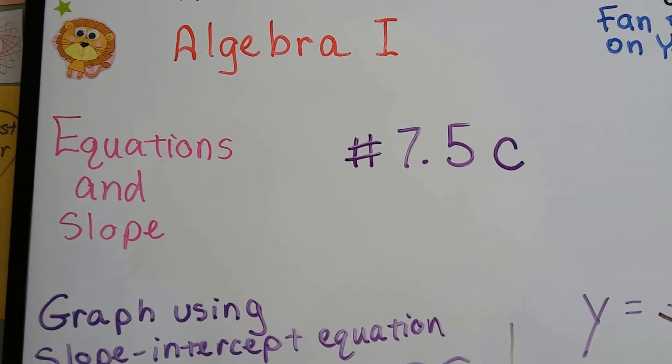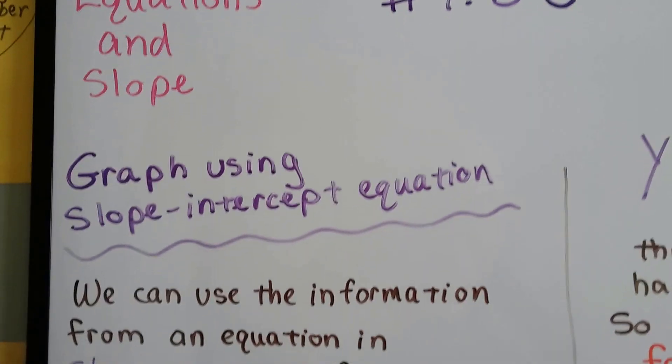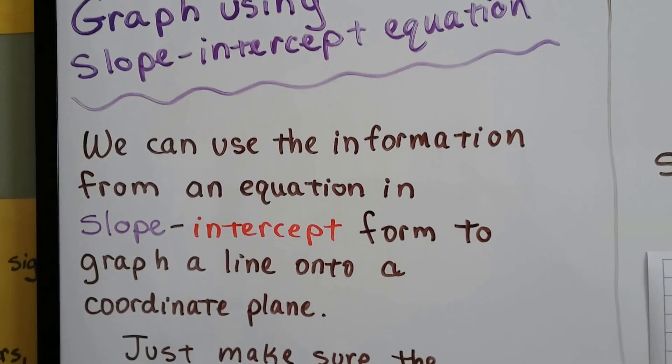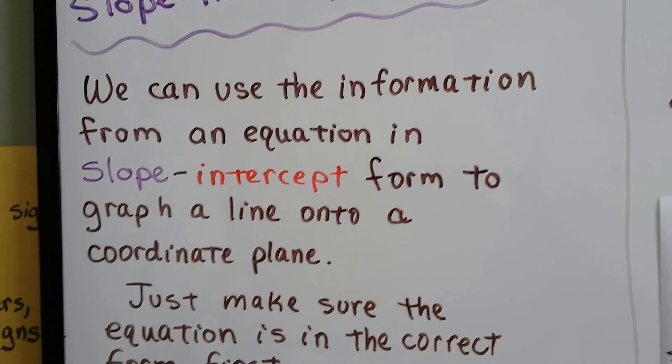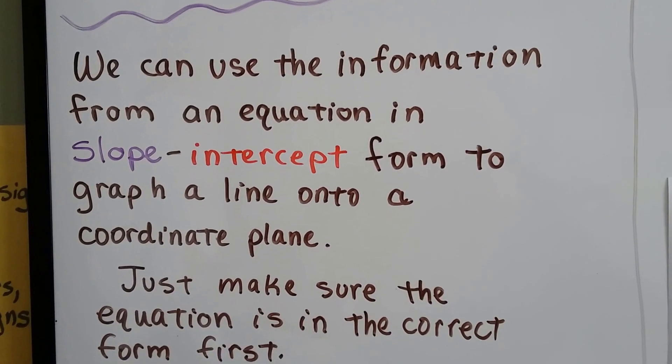7.5c, algebra 1, graph using slope-intercept equation. We can use the information from an equation in slope-intercept form to graph a line onto a coordinate plane.